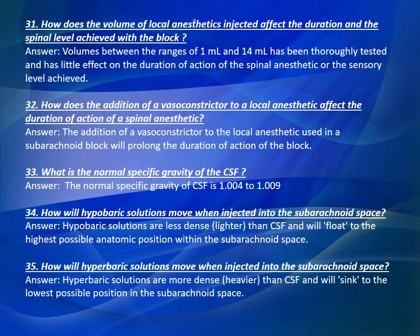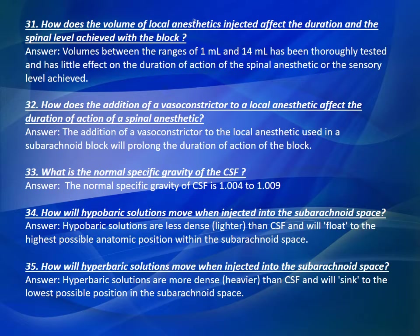Question Number 30: What two factors determine the duration of action of a spinal anesthetic? Answer: The anesthetic drug used and the total dose given. Question Number 32: How does the addition of a vasoconstrictor to a local anesthetic affect the duration of action of a spinal anesthetic? Answer: The addition of a vasoconstrictor to the local anesthetic used in a subarachnoid block will prolong the duration of action of the block.